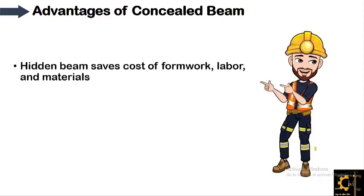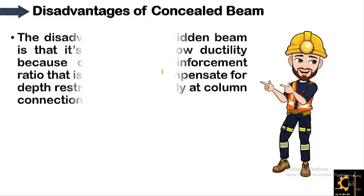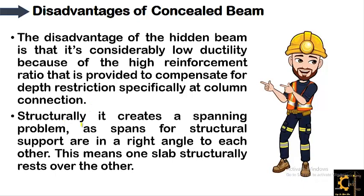The advantages of concealed beams are: hidden beams save the cost of formwork because they lie within the slab and do not require any extra formwork, labor, or materials. They create an acceptable aesthetic appearance which permits efficient interior space partitioning. The disadvantages are: considerably low ductility due to the high reinforcement ratio needed to overcome depth restriction, making the beam brittle and less ductile, especially at column connections. Structurally, it creates a spanning problem as spans are at right angles to each other, meaning one slab structurally rests over the other.